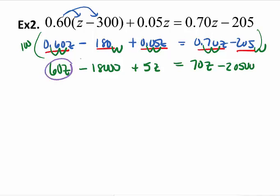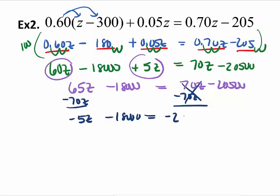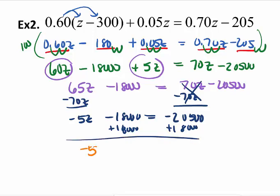I'm now going to collect like terms that are already on the same side. I don't need to change any signs here. Now I'm going to subtract 70z from both sides. Those cancel. I get a negative 5z. And my next step is going to be to add the 18,000 to both sides. You can use a calculator to solve any of these pieces or deal with adding and subtracting. In this case, if I do this, I have a negative 2,500 left.